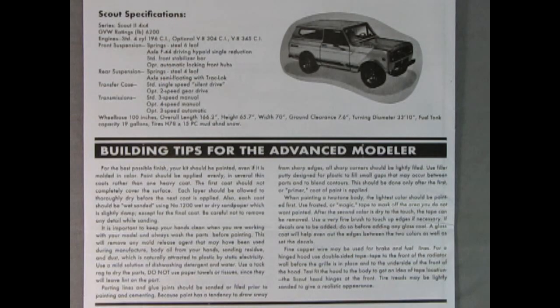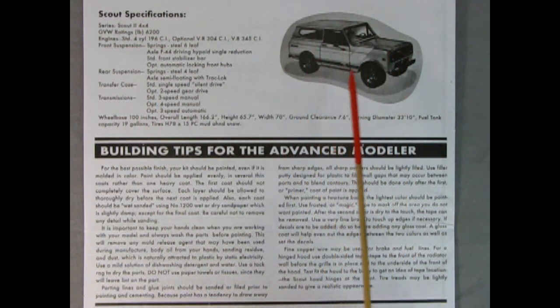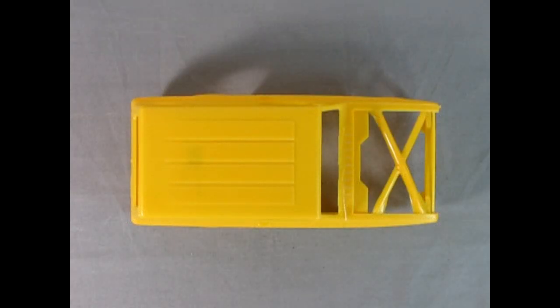And then they give us more photographs of the model and details on the decal instructions, where to put your decals on your kit. On the back of the instruction sheet, we have our scout specifications, as well as this wonderful three-quarter front view of the model. And then down here, it has building tips for the advanced modeler. Again, another great inclusion from AMT. Who likes plastic? I do, and you do too.